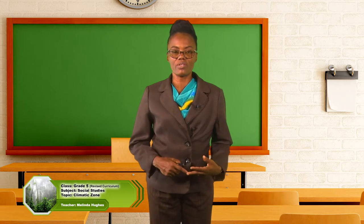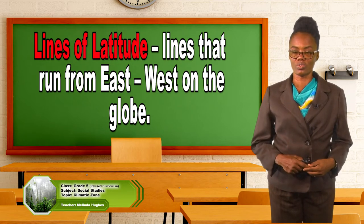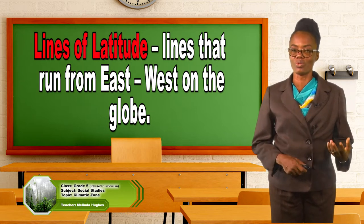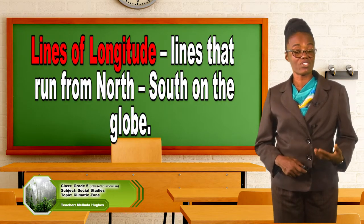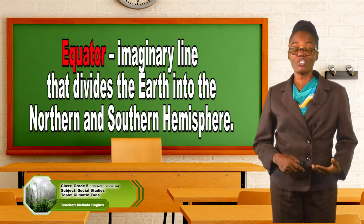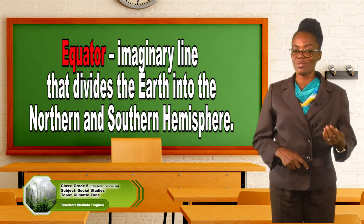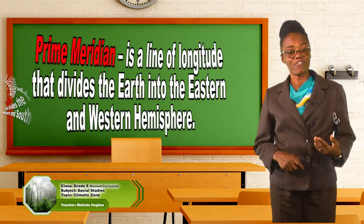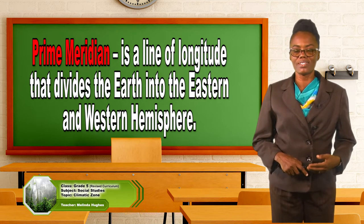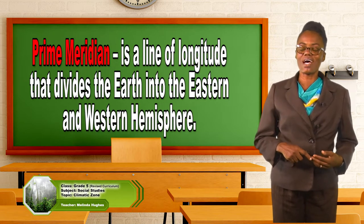Let us examine some terms that are associated with climatic zones. The first one is lines of latitude. Lines of latitude are lines that run from east to west on the globe. Lines of longitude are lines that run from north to south on the globe. Next, the equator is an imaginary line that divides the earth into the northern and southern hemisphere. And the final term is the prime meridian, which is a line of longitude that divides the earth into the eastern and western hemisphere.